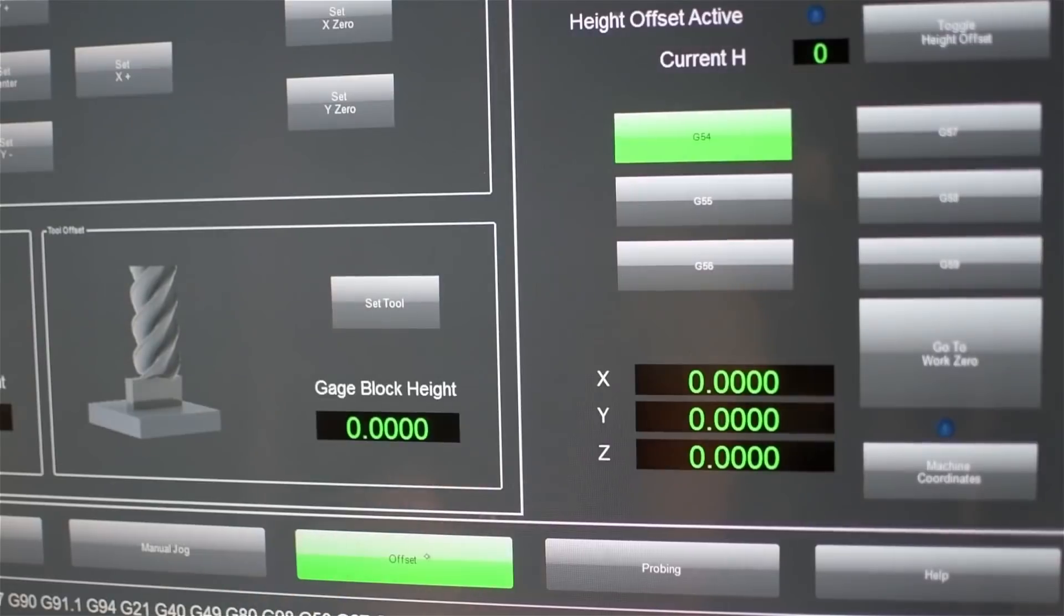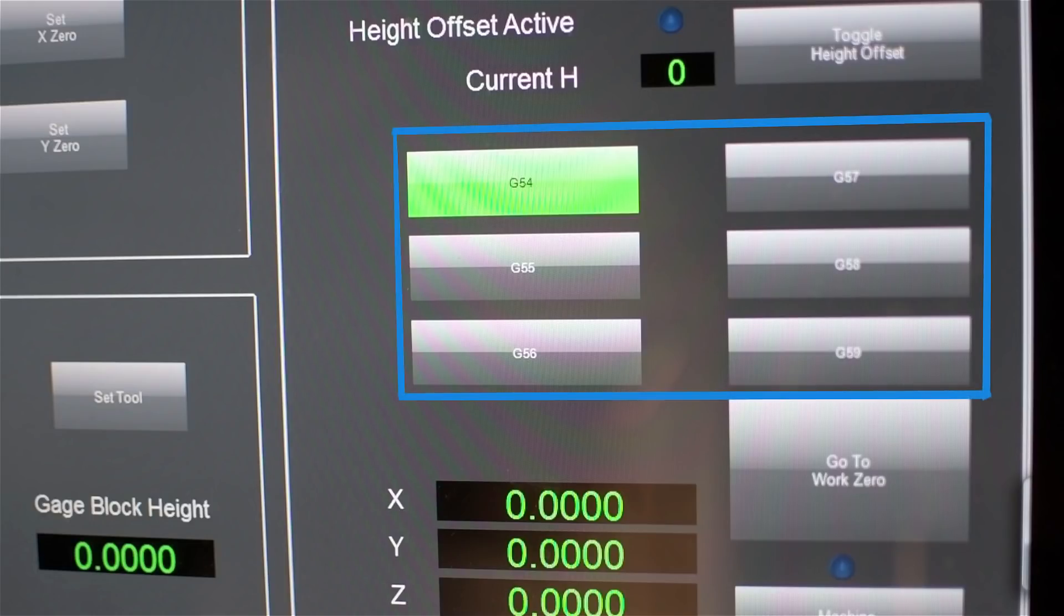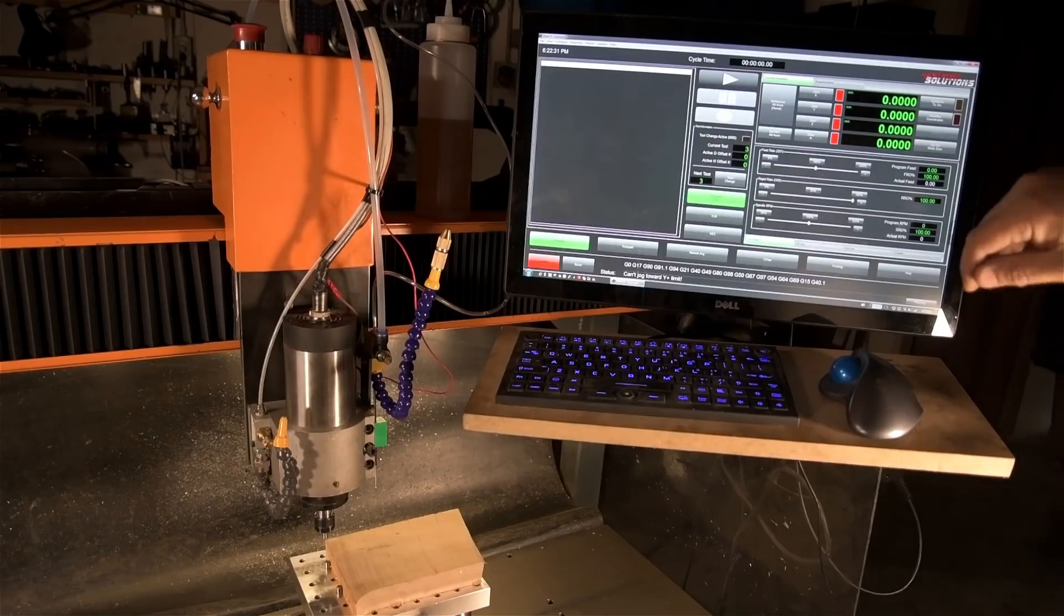And if we go over to the offsets page, we can see we're in G54. Now I don't know how many offsets you can make, but Mach, I believe, can handle 255 user-defined offsets. You might be able to get into more, but you can see there are six easily accessible offsets right here on the offsets page. But personally, I don't think I've ever used more than, I don't know, three.